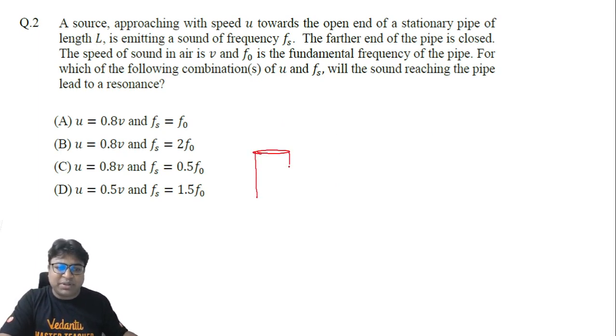So let's say that there is a stationary pipe with an open end, and there is a source which is emitting some sound of frequency fs and it is traveling with speed u. The farther end of the pipe is closed, so it is a closed pipe. The speed of sound in air is v and f_naught is the fundamental frequency of the pipe.